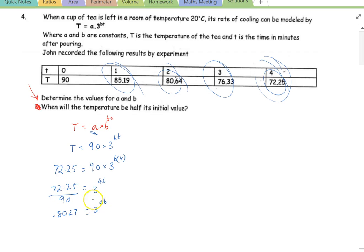So, after that, you're going to want to probably take the log of both sides. Log 3. I'll just move the 4B to the front here. Okay, and then we have log 0.8027 divided by log 3 equals 4B.